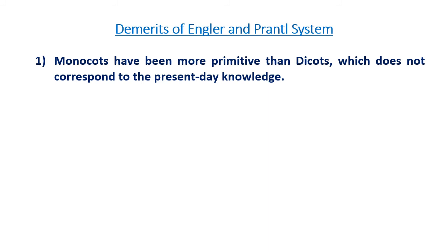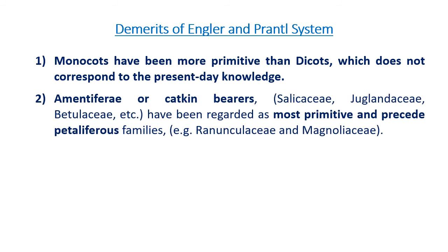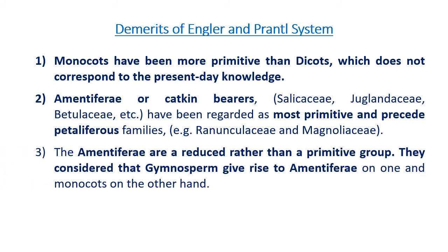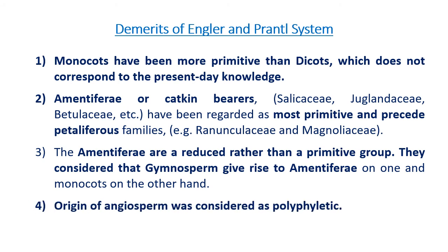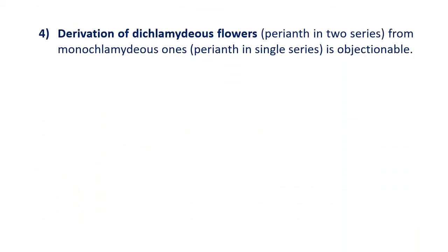The demerits of the Engler and Prantl system: monocots have been considered more primitive than dicots, which does not correspond to present-day knowledge. The Amentiferae, or catkin-bearing families, have been regarded as the most primitive and precede petaliferous families; however, Amentiferae are a reduced rather than a primitive group. They consider that gymnosperms give rise to Amentiferae on one hand and monocots on the other. The origin of angiosperms was considered polyphyletic. The derivation of dichlamydous flowers from monochlamydous ones is also objectionable.